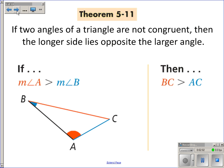Theorem 5-11 is kind of the opposite of the idea we talked about a little bit ago. If two angles of a triangle are not congruent, then the longer side is opposite the larger angle. So now I'm using angles to tell me about lengths of sides.